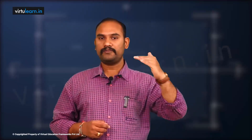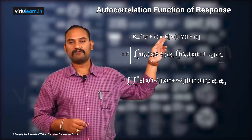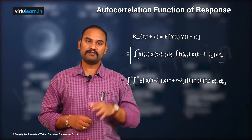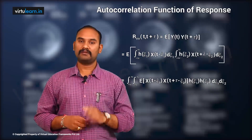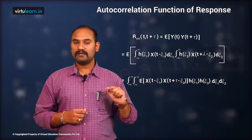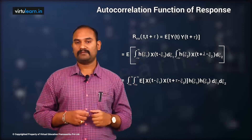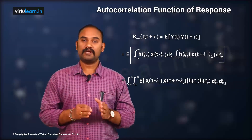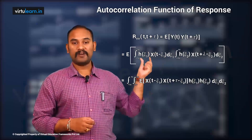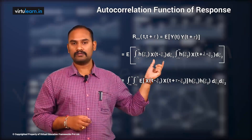We have seen the mean value and mean squared value of the response. Next we are interested in the autocorrelation function of the response — the ACF — which we are carrying out in the time domain. Since the input random process is x(t) and the response is y(t), we are interested in finding out the ACF of the response y(t), which is Ryy.